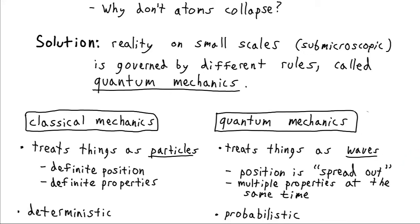And so waves are different. You know, the position of a wave is spread out. You can't pinpoint an ocean wave to one specific coordinate. Furthermore, waves can have multiple properties at the same time.